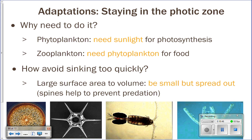As we discuss different animal phyla, we'll do what I call a specimen spotlight to look at cool examples like the sunfish. Now — both phytoplankton and zooplankton need to stay in the photic zone at the surface. Phytoplankton need to stay there to do photosynthesis, and zooplankton need to stay there because their food source — phytoplankton — is in the surface waters.